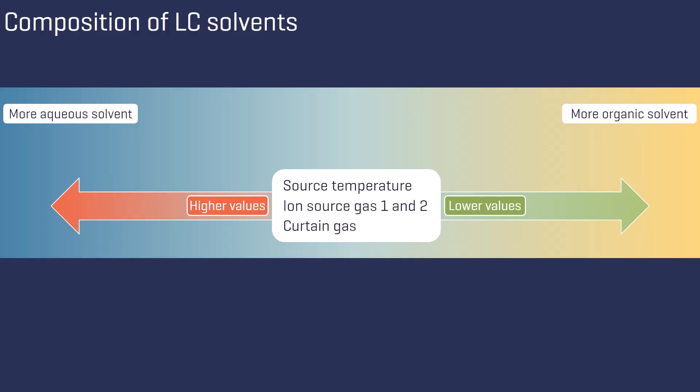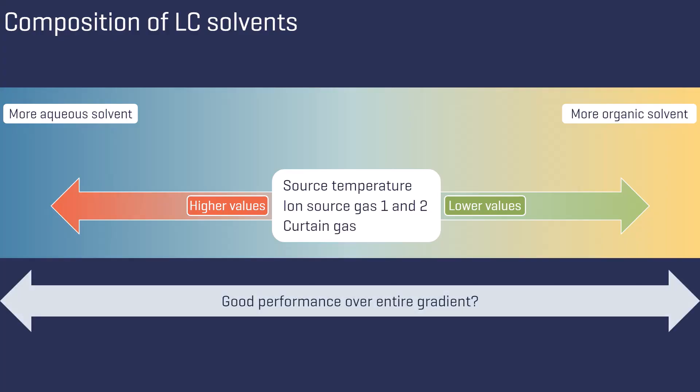When performing a gradient LC method, you need to make sure that your source parameters give optimal performance over the entire gradient. Optimizing source parameters therefore always involves a compromise and it is essential to avoid using pure organic solvents during this process. Later, when gradient dilution is used, the performance of the source parameters in the more aqueous retention phase should be verified.